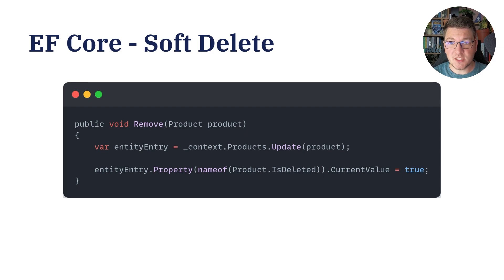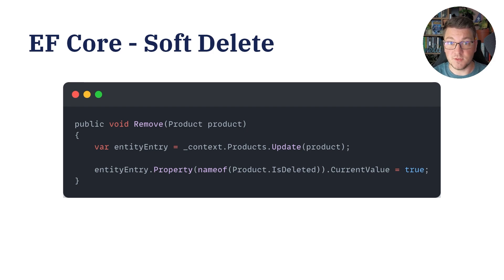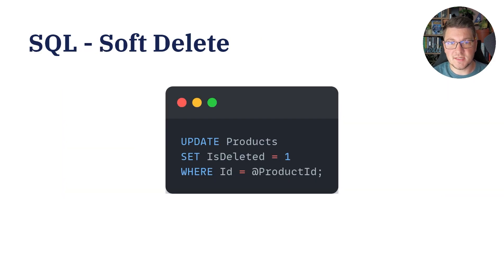A soft delete tries to avoid deleting data from the database by marking a respective record as deleted. In the case of a product, you would update the remove method on your repository to update a product instead, and it's going to set an isDeleted flag to true instead of deleting this from the database. This is going to produce a slightly different SQL statement — instead of a delete statement, we will have an update statement setting the isDeleted column to true or one in the case of a SQL database, and it's going to update just that one record.